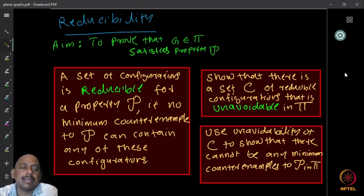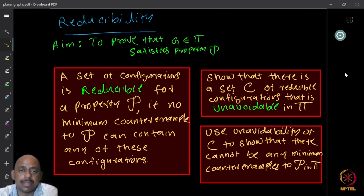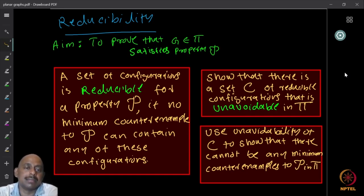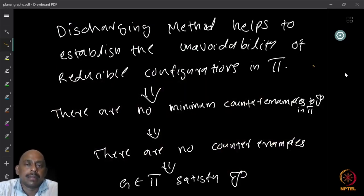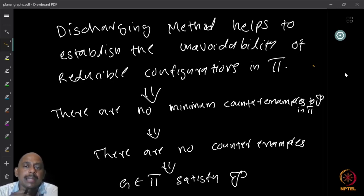The idea of discharging is to show a set of reducible configurations is unavoidable — that part alone uses the discharging method. Reducibility must be shown separately. Once a configuration is shown to be reducible, the discharging method shows it is unavoidable in the class. If there are no minimum counterexamples for property P in π, there are no counterexamples at all, and therefore graphs in π satisfy the property.